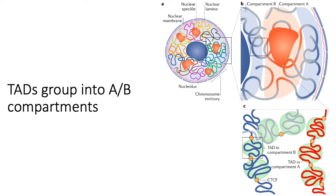These A/B compartments are one of the big discoveries that Hi-C made when the technology was first developed. One functional consequence of this A-versus-B distinction is that the B compartment tends to associate with distinct nuclear structures — it tends to be found close to the nuclear lamina, forming many of the LADs discussed earlier, and also sits near the nucleolus. In contrast, compartment A TADs tend to sit in the interior of the nuclear space, between the nucleolus and the lamina.